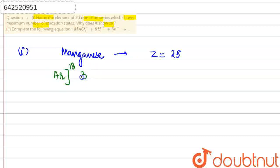which shows maximum number of oxidation states and why does it show? So considering the first part, if we talk about manganese, manganese of 3D transition series, which has an atomic number of 25, will be having a configuration argon 18 and then 3D5 4S2.